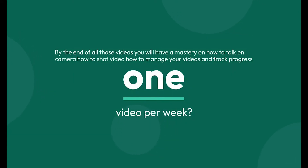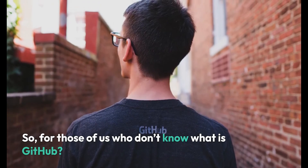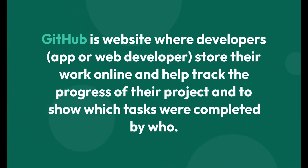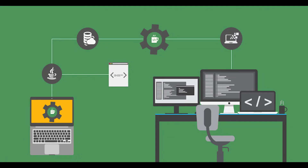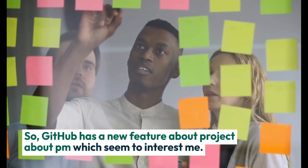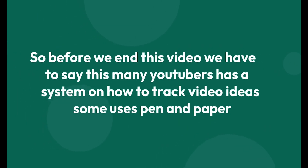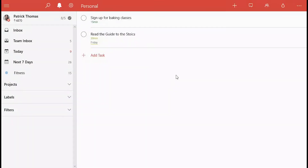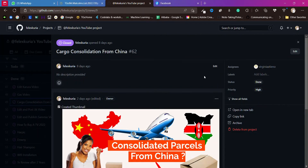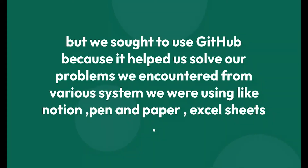So how did we manage to produce one video per week? We researched various tools online for project management and settled on GitHub as our project management system. GitHub is a website where developers store their work online and track the progress of their projects, showing which tasks were completed by whom. GitHub has a new feature around projects for PM which interested me. Many YouTubers have a system to track video ideas — some use pen and paper — but we chose GitHub because it helped us solve problems we encountered with other systems like Notion and Excel sheets. The basic idea is to record an idea as soon as it comes to your brain.